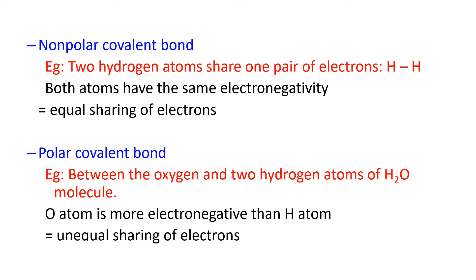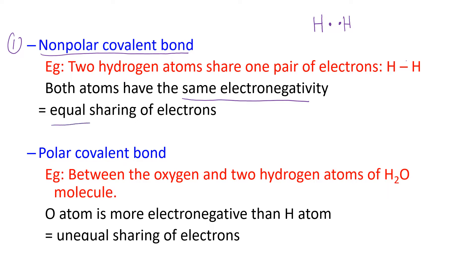There are two types of covalent bond. The first is non-polar covalent bond. For example, two hydrogen atoms in a hydrogen molecule each have one valence electron, which is shared with the other hydrogen atom. The two hydrogen atoms have the same electronegativity, resulting in equal sharing of electrons between them.